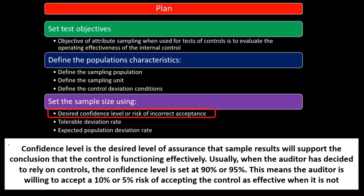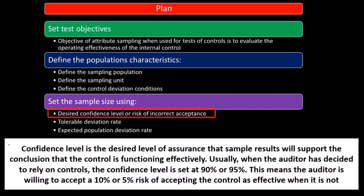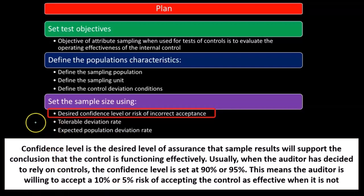Usually when the auditor has decided to rely on controls, the confidence level is set at 90% or 95%. So notice we're getting very specific in our testing here using statistical sampling. This means the auditor is willing to accept a 10% or 5% risk of accepting control as effective when it is not.